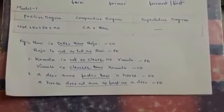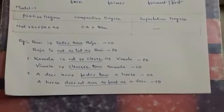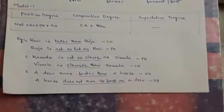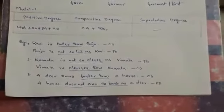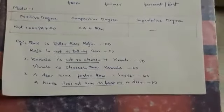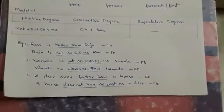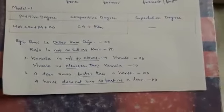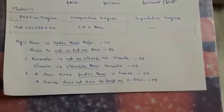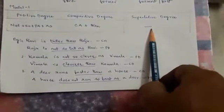Let us start with the degrees of comparison. Remember, in the first model, we take only two persons or two things. So there is no place for superlative.